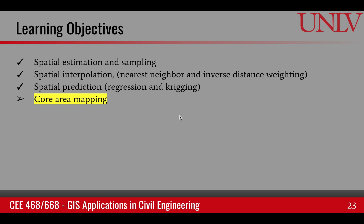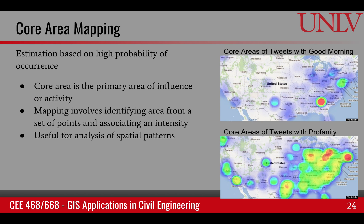The last learning objective of this module is core area mapping. Core area mapping is estimation based upon the high probability of occurrence — where things happen more, they become part of the core area, related to the density of something happening. Core area is the primary area of influence or activity, and mapping involves identifying an area from a set of points and associating an intensity or density with that. It's very useful for analysis of spatial patterns.